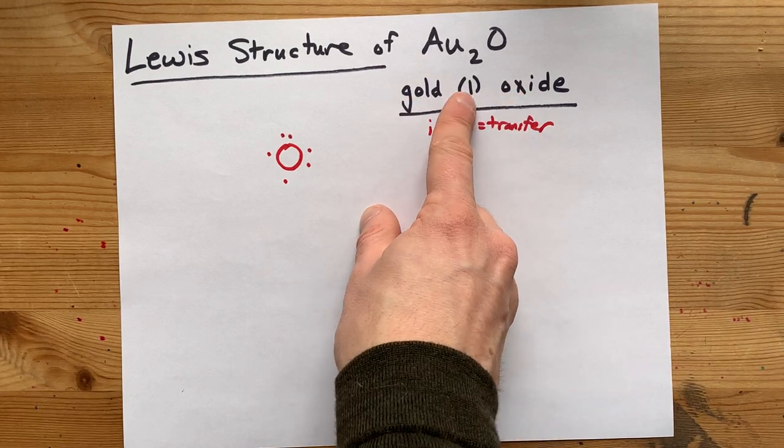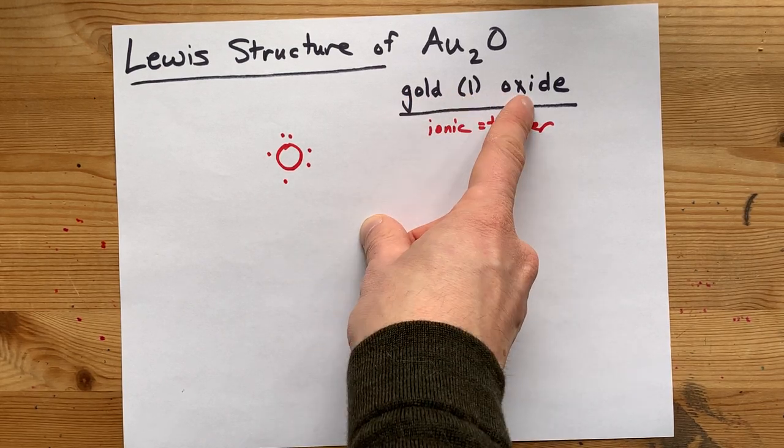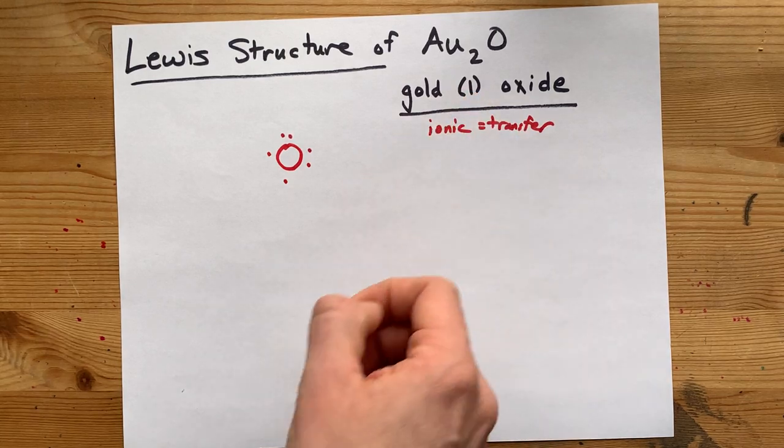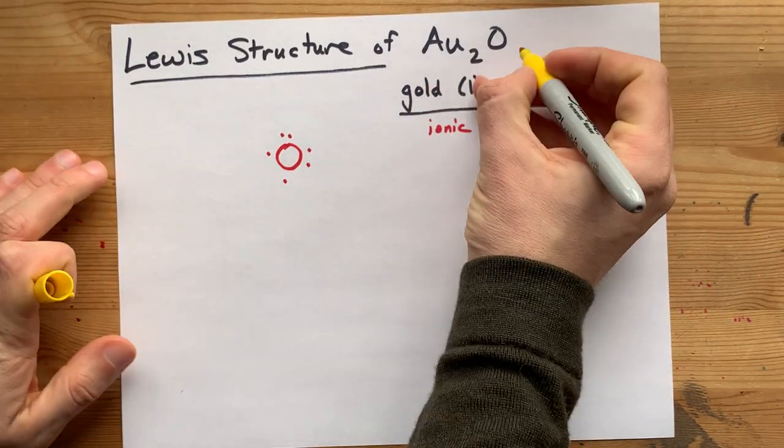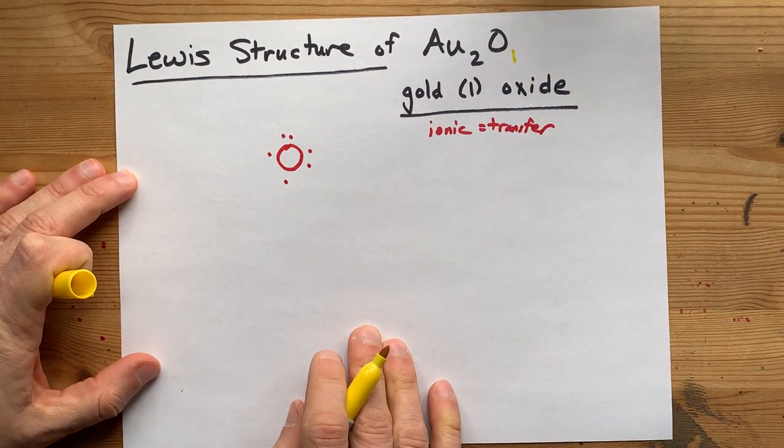Well, if you're given the name, it's right there. Gold(I) oxide means that the gold has a +1 charge. If you're given the formula, it's the subscript that had been on oxygen.